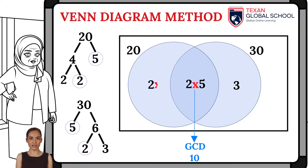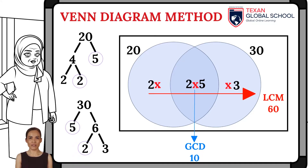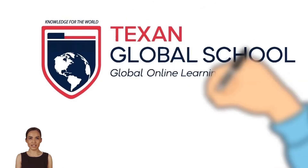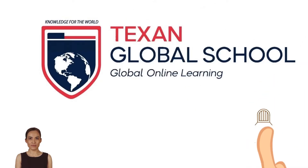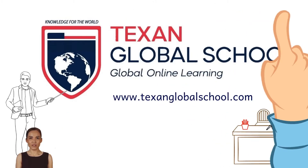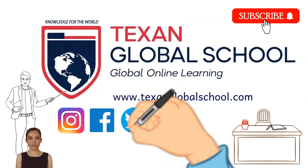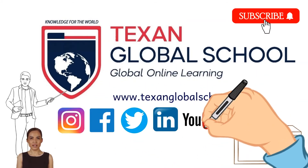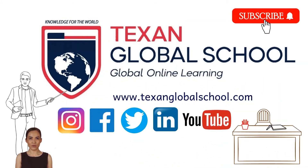And this value, combined with the remaining factors of each number, forms the least common multiple: 2 times 2 times 3 times 5. Therefore, the least common multiple of 20 and 30 is 60. Texan Global School — Global Online Learning, Knowledge for the World. www.texanglobalschool.com